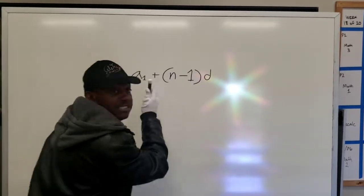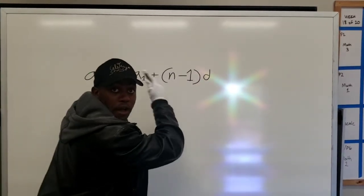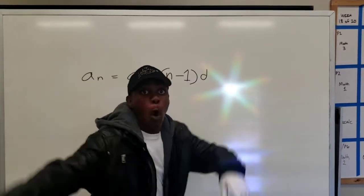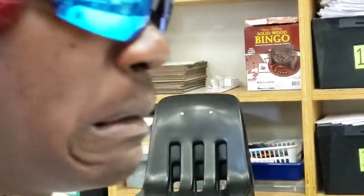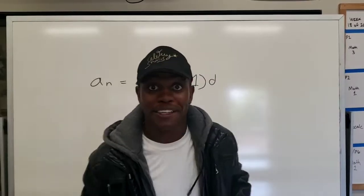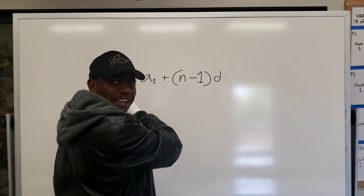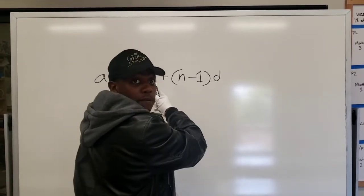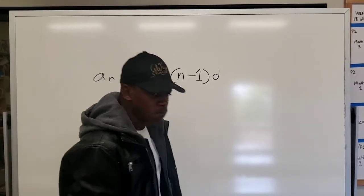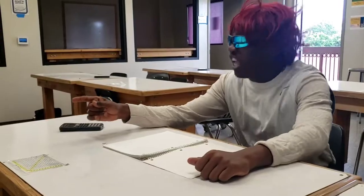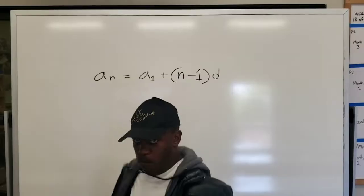aₙ equals a₁ plus (n minus one) times d — that's the formula. aₙ is the nth term in the sequence, a₁ is the first term of the sequence, and d is the common difference between terms.